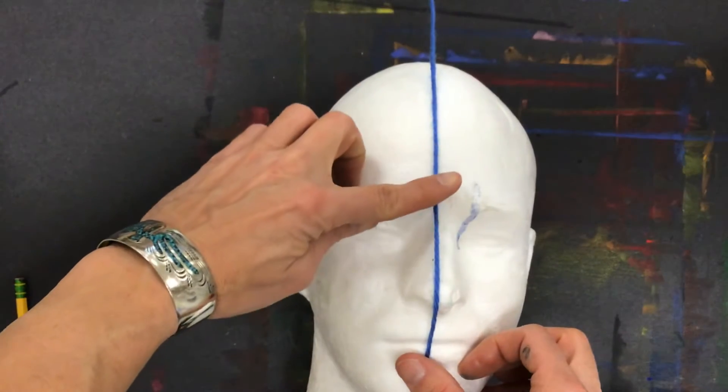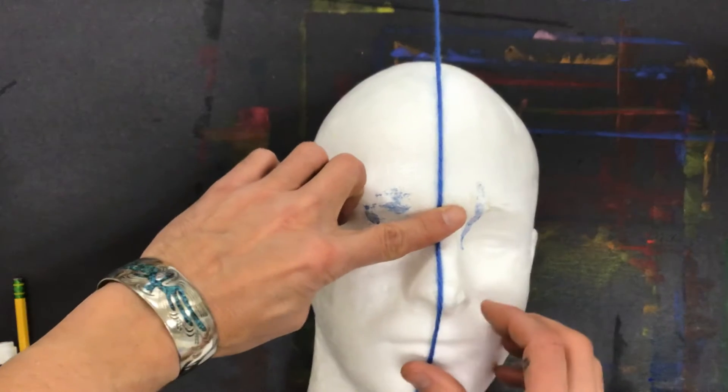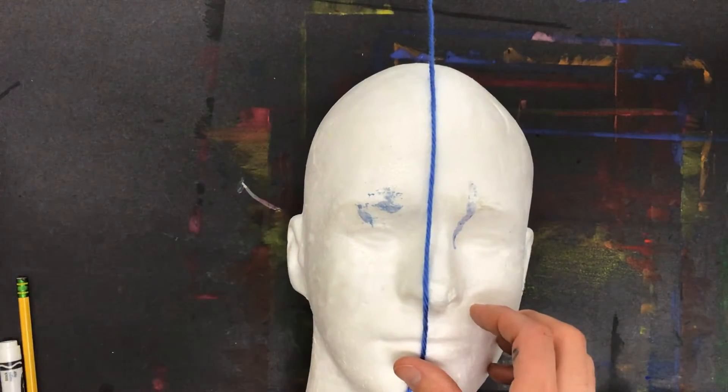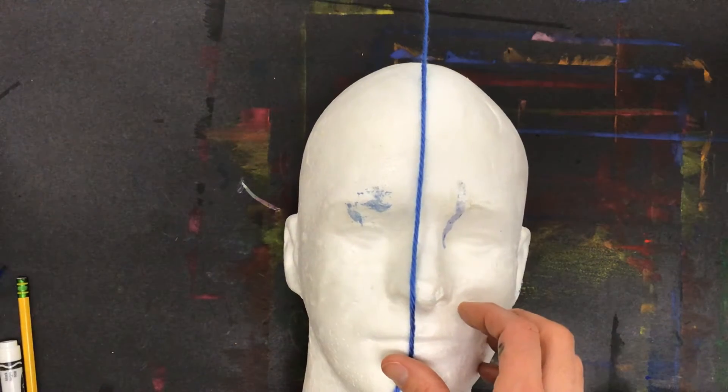It goes up over the forehead, down at the nose, up over the nose, and then down towards the mouth. I'm trying to imitate that with a vertical line.